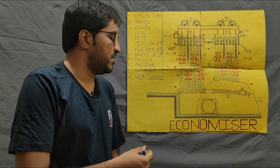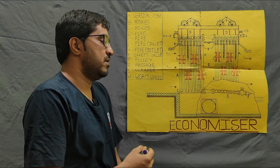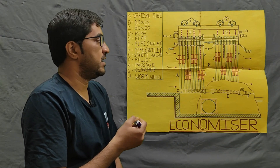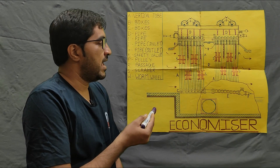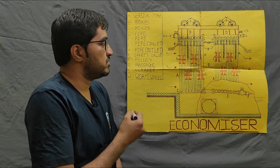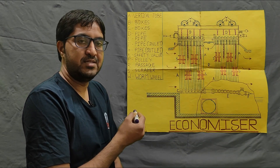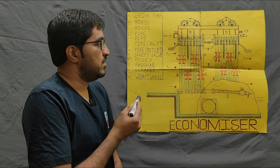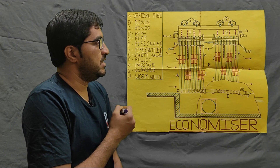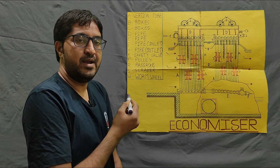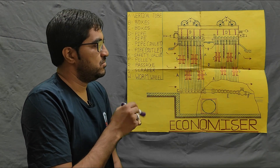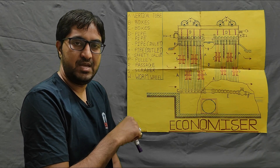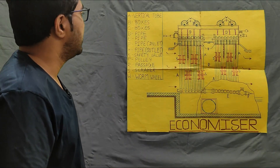Today we will discuss the working principle of the economizer — how it works in the thermal power plant. First I will introduce the different parts of the economizer, then we will discuss its working principle. The economizer is an accessory in the boiler; it is not necessary, but when we use it, it increases the thermal efficiency of the boiler.